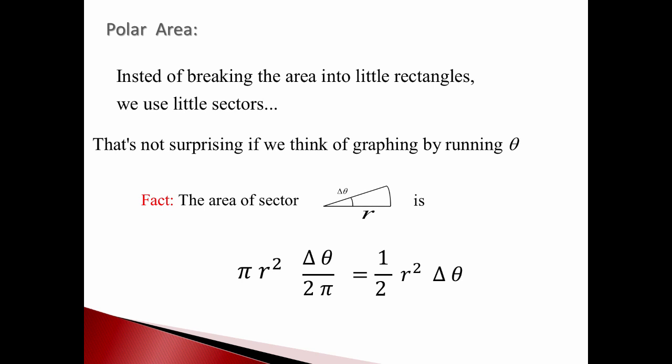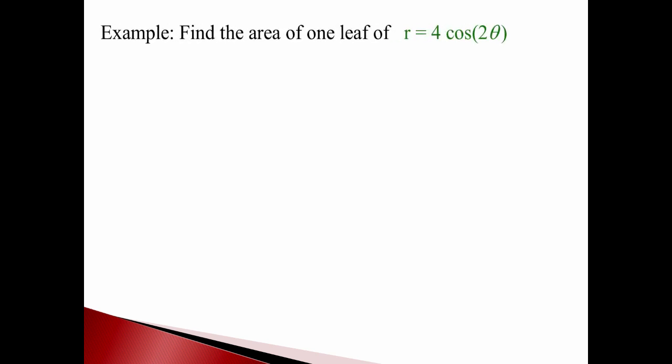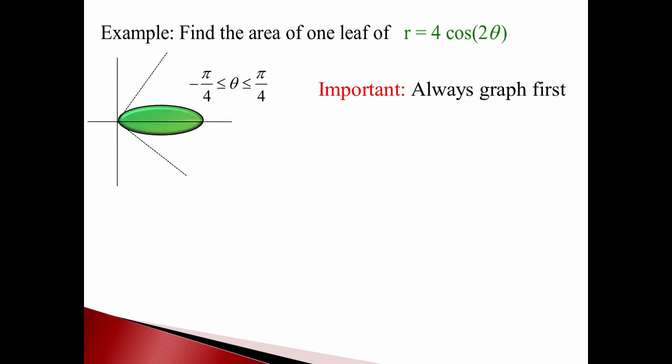So what we'll do is move our theta along, pretend that r is constant, that'll sweep out a little sector, find the area of that sector — ½r² becomes dθ — and we use smaller and smaller pieces and get an integral. Here's an example: let's find the area of one leaf of a rose. It's super important to always graph these first. So remember, a rose like this example had 4 petals or 4 leaves.